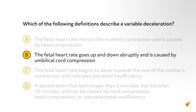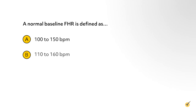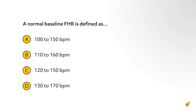Category 2 can include any of the following: tachycardia, bradycardia that retains variability, minimal or marked variability, no accelerations after stimulation, recurrent variable decelerations with minimal or moderate variability, prolonged deceleration which is greater than 2 minutes but less than 10, recurrent late deceleration with moderate variability, and variable deceleration with other characteristics such as slow return to baseline. Category 2 is not predictive of abnormal fetal acid-base status but requires continued monitoring and reevaluation.